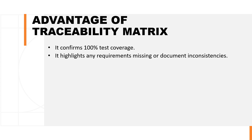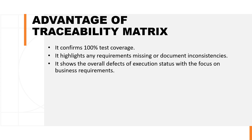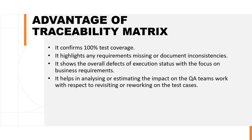Based on that identification, we can take further action. Third, the traceability matrix shows the overall defects and execution status with a focus on business requirements. Through this deliverable, we can check the discrepancies observed during the validation and at which point. Fourth, the traceability matrix helps in analyzing or estimating the impact on the QA team's work with respect to revisiting or rework on the test cases. At the time of review and approval of documents, if any gap is identified, it can be revisited or, if required, we can rework or retest that particular test case.